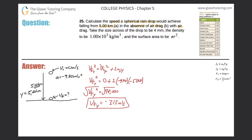Now letter (b): we repeat this with air drag. The problem tells us the drop diameter is 4 millimeters and gives us the density and surface area. The drag force formula is: F_D = ½ · C_D · ρ · A · v², where C_D is the drag coefficient, ρ is the density of the fluid, A is the cross-sectional area, and v is the velocity.